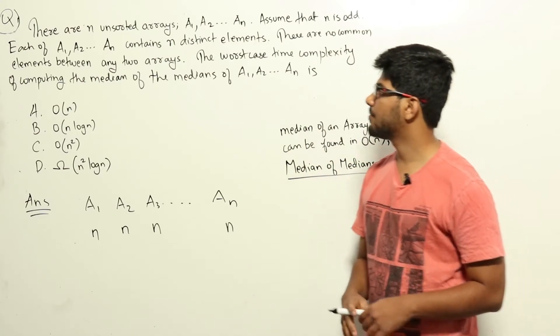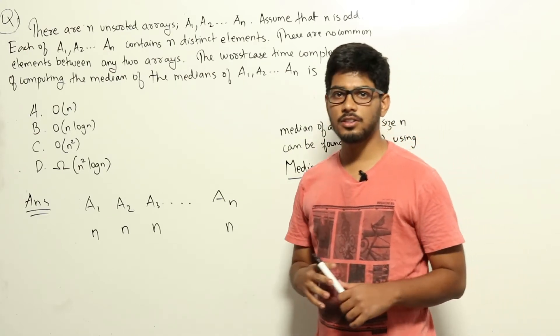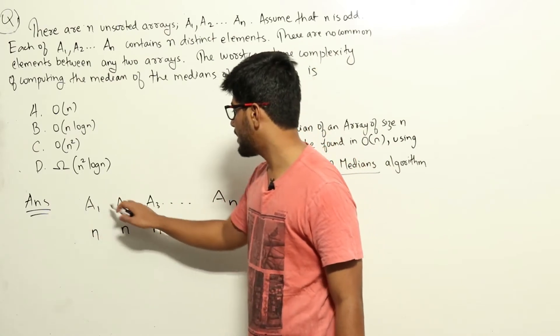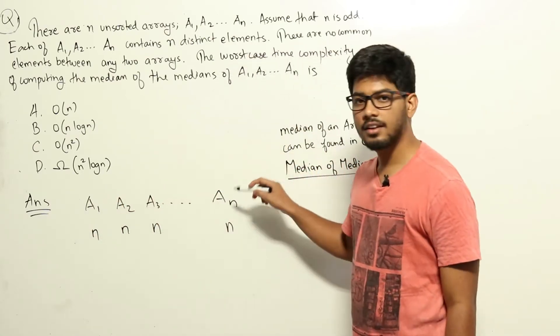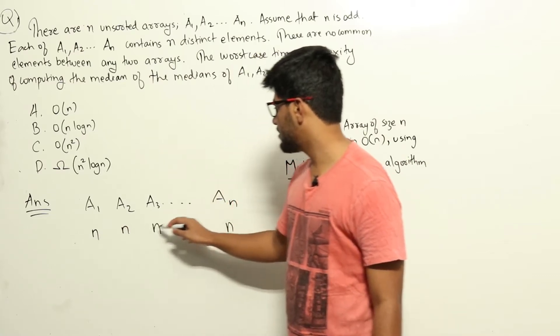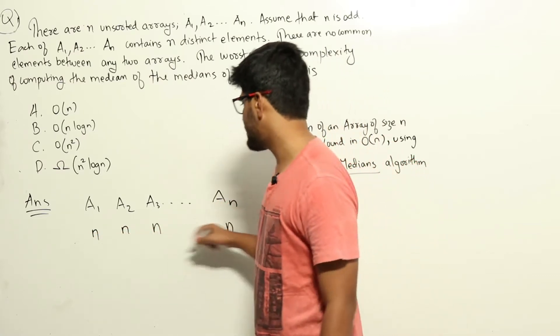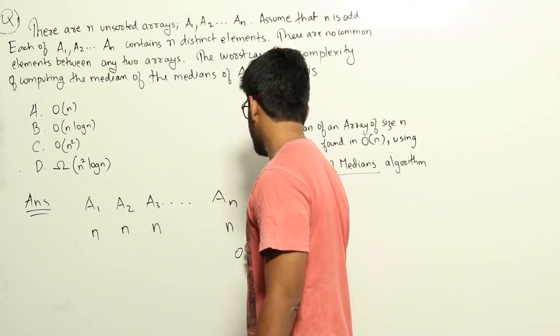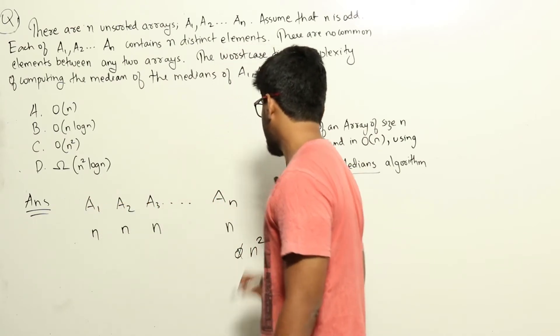So this is a question from algorithms section. In the question they are giving us n arrays a1, a2, a3, etc. up to an. Each of these arrays have n elements. Total number of elements in all the arrays combined together will be equal to n square.